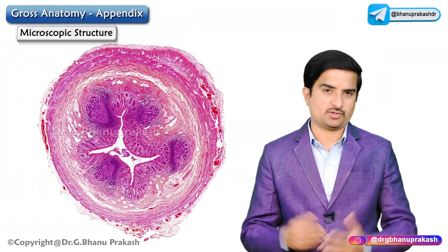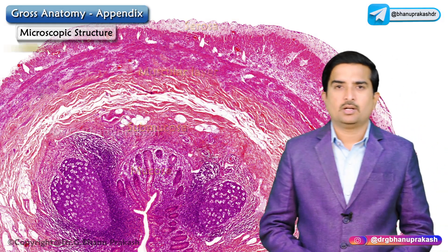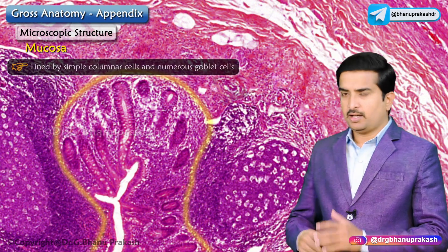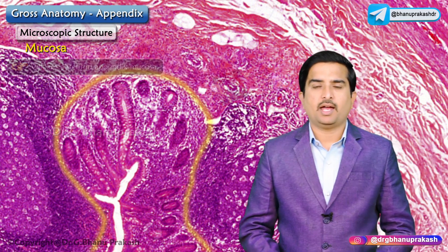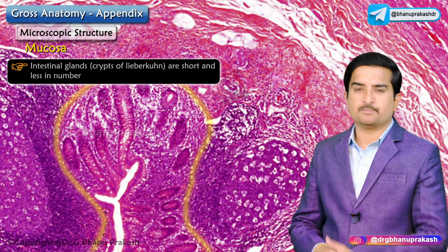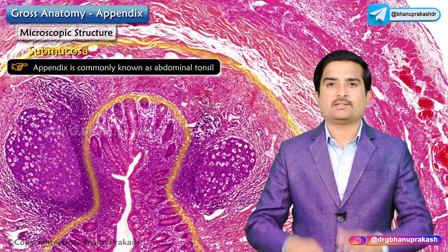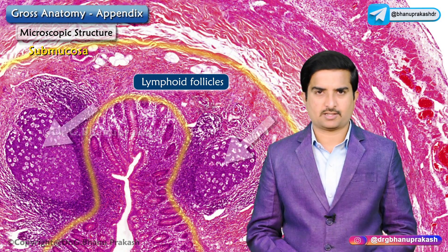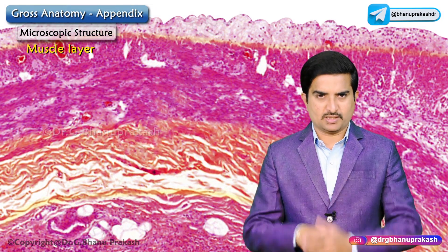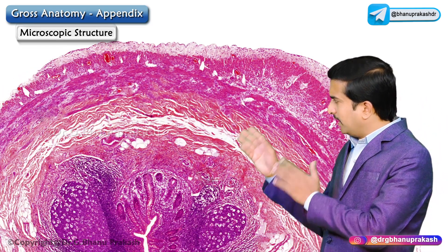Now let us talk about the histology — the microscopic structure of the appendix. The wall contains four layers: mucosa, submucosa, muscular layer, and serosa. The mucosa is lined by simple columnar epithelial cells and numerous goblet cells; villi are absent in the appendiceal mucosa, and the intestinal glands, also called the crypts of Lieberkühn, are short and fewer in number compared to those of the ileum. The submucosa contains a ring of large lymphoid follicles, which is why the appendix is commonly known as the abdominal tonsil. The muscle layer contains outer longitudinal and inner circular smooth muscles, and the serosa contains visceral peritoneum.